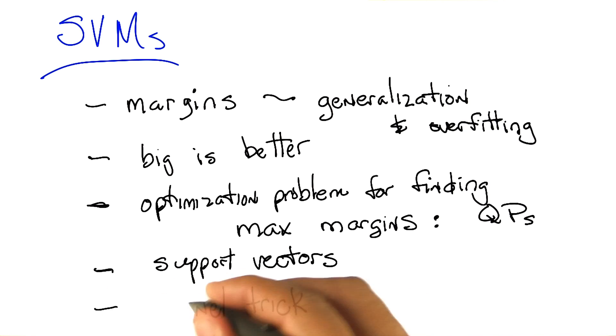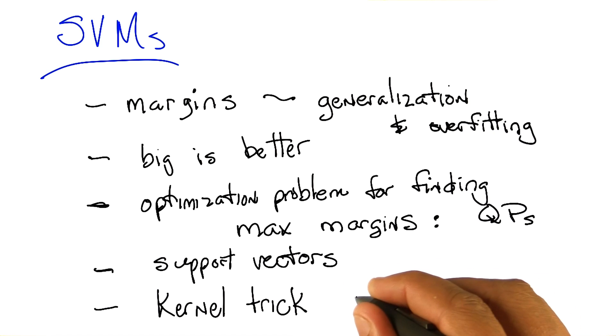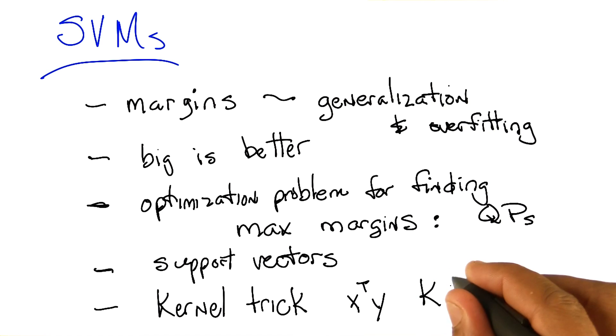Right. I love the kernel trick. And as you say, we took basically x transpose y and generalized it to a generic similarity function K of x comma y.